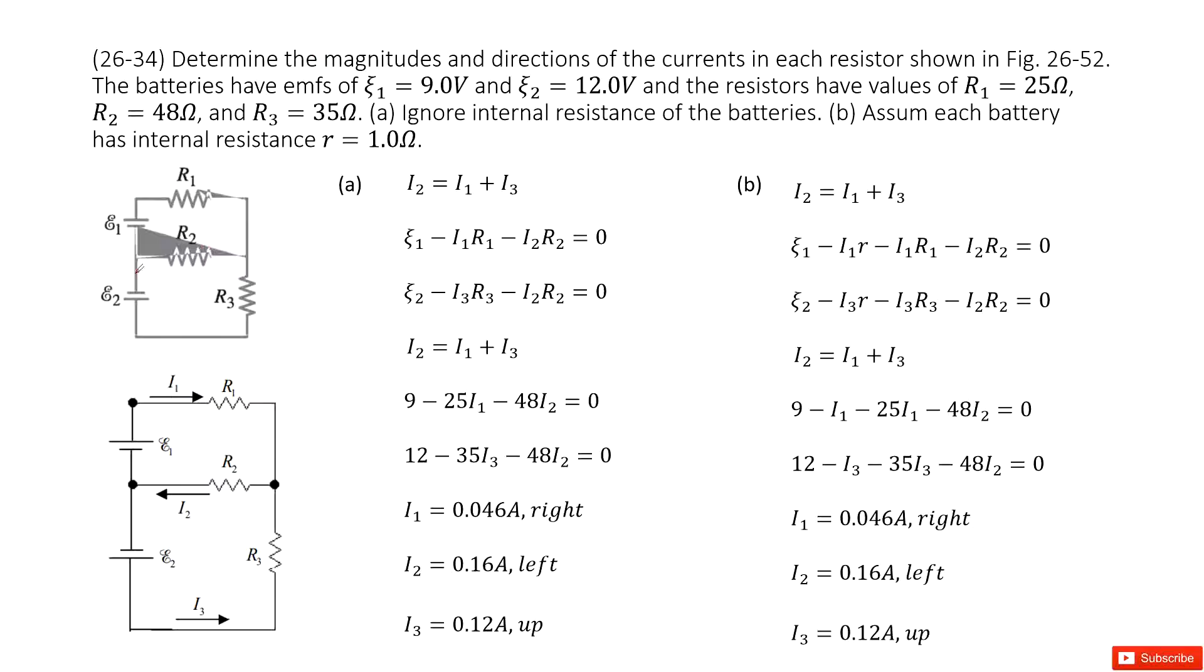So we look at this circuit. We have two batteries, the EMF epsilon 1, epsilon 2, and three resistors R1, R2, R3.